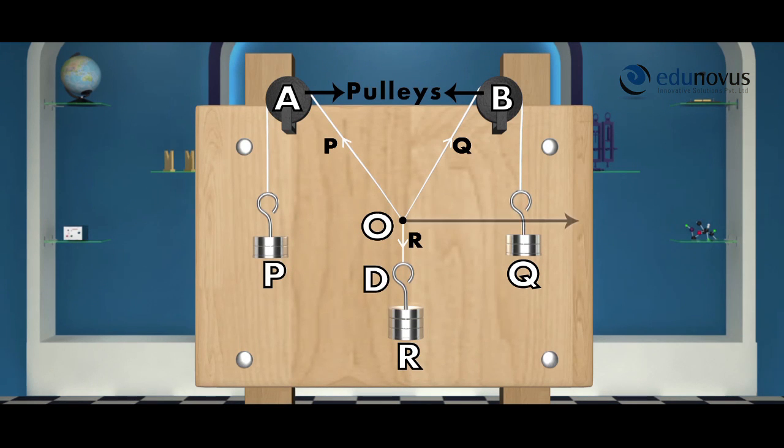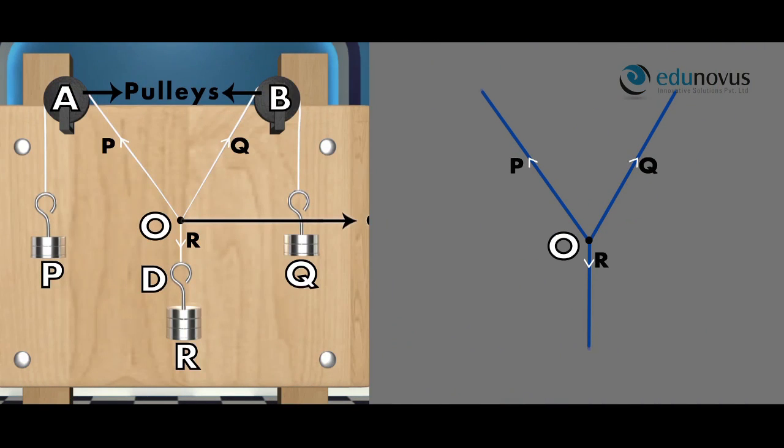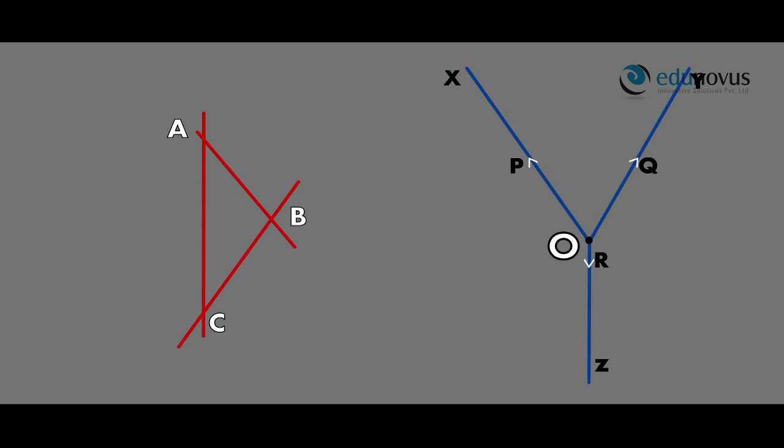Here P, Q and R are three coplanar forces acting at point O. By drawing lines parallel to the forces OP, OQ and OR, a triangle ABC is formed. The sides of the triangle ABC, which are P, Q and R, represent the forces OP, OQ and OR.